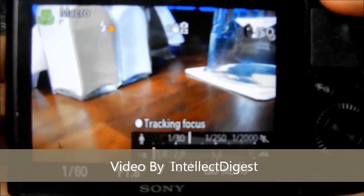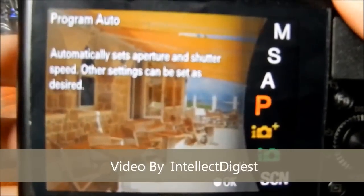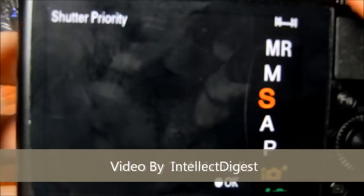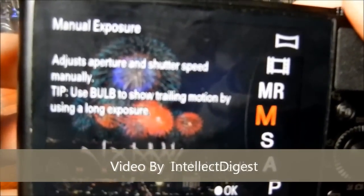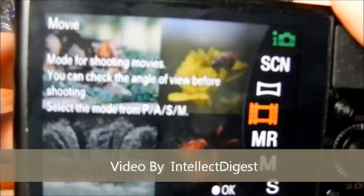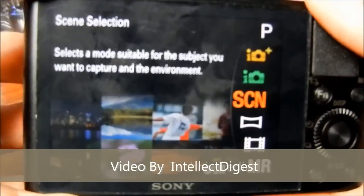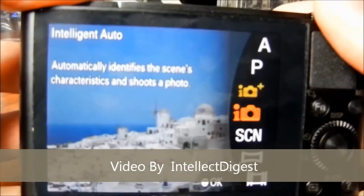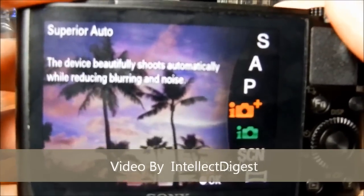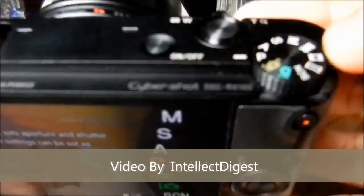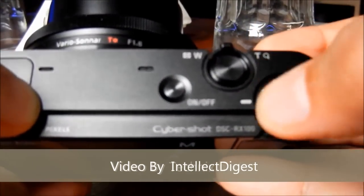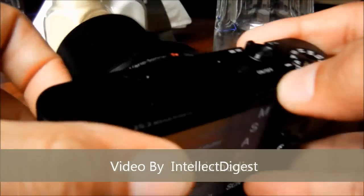It gives you several modes. Right now we are in auto mode, superior auto, program auto, aperture priority, shutter priority, manual exposure, memory recall, movie for videos, sweep shot for panorama, scene selection, intelligent auto, etc. So these are the modes that you get which are pretty exhaustive and extensive as you get in DSLR cameras.